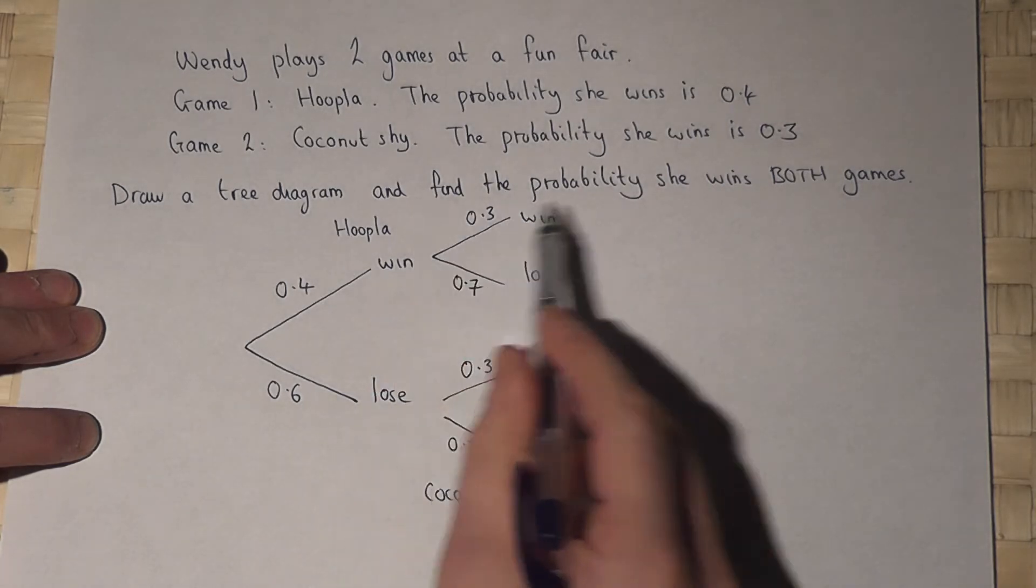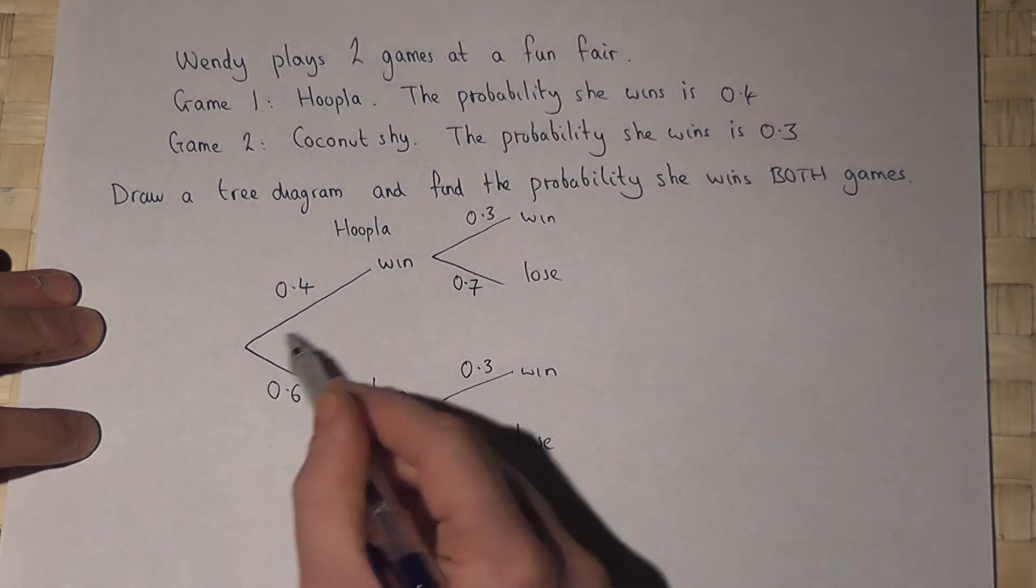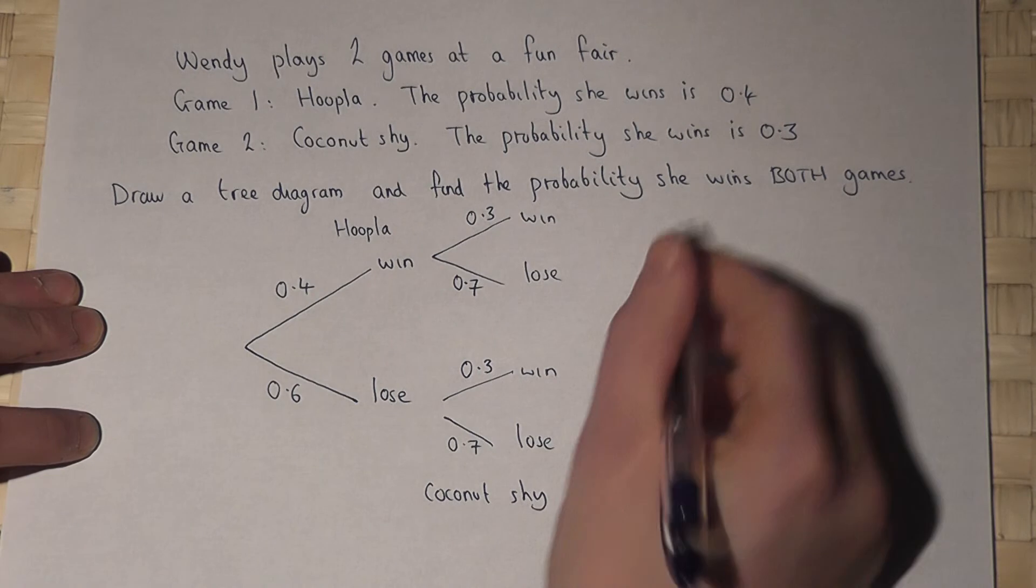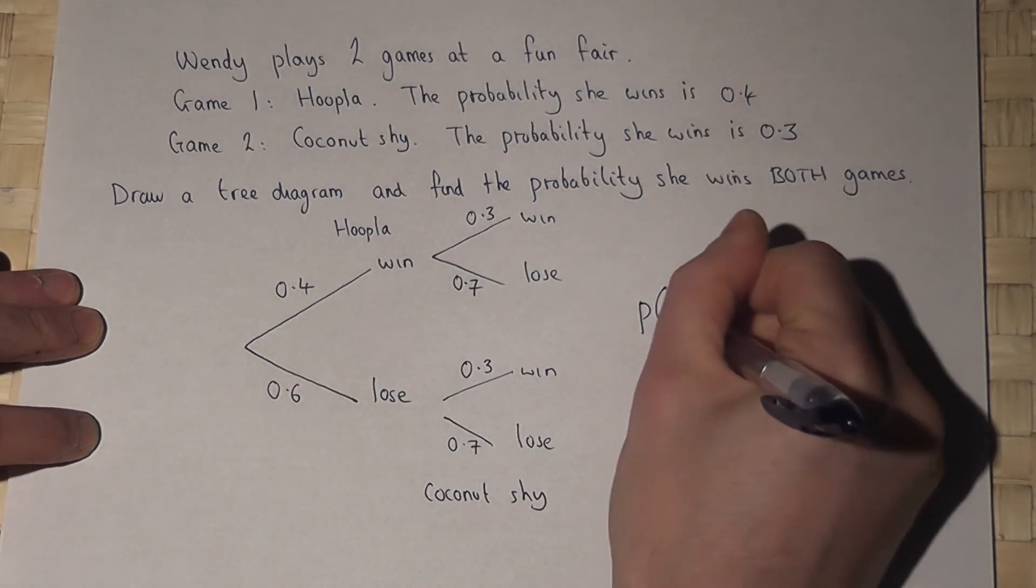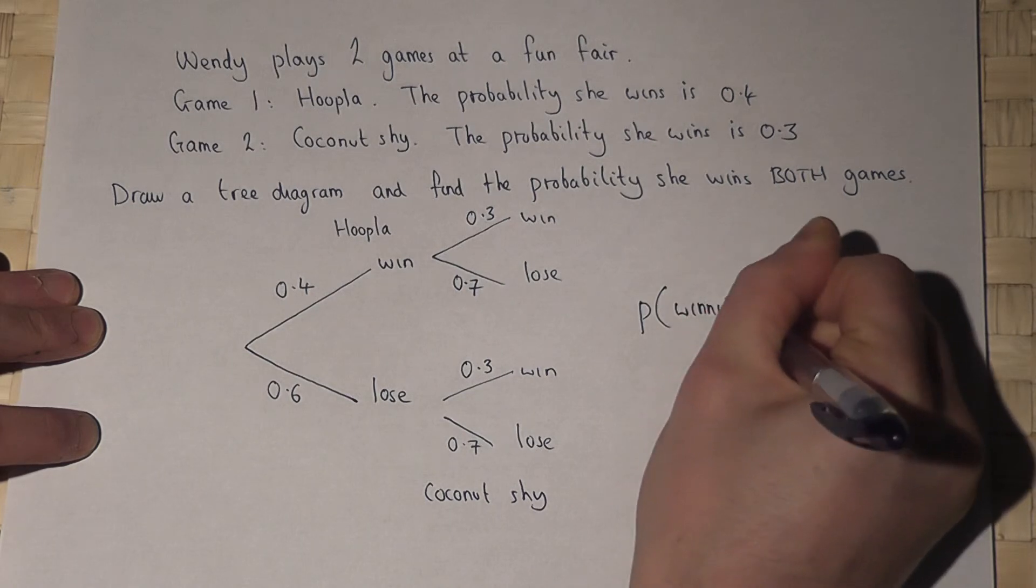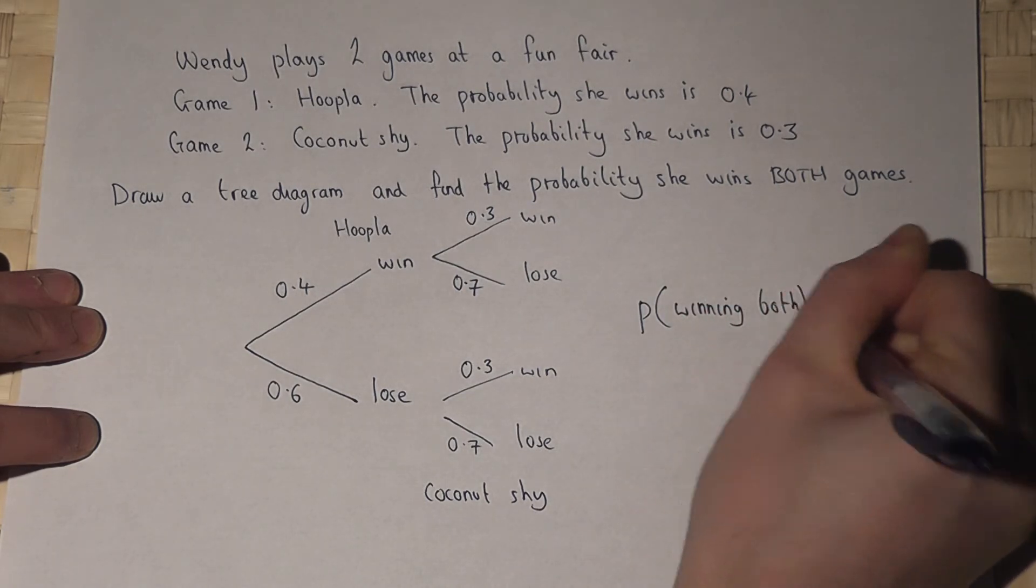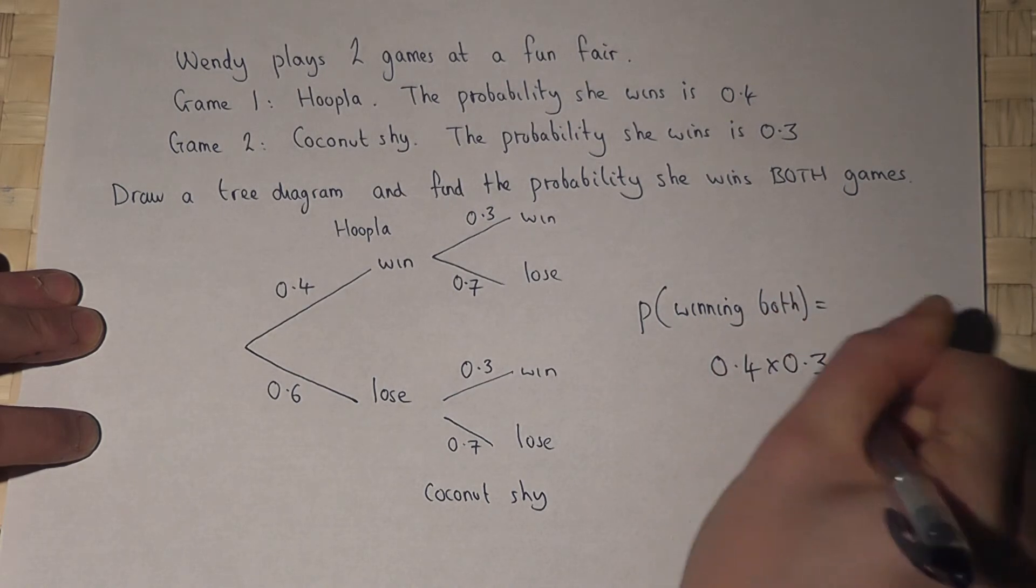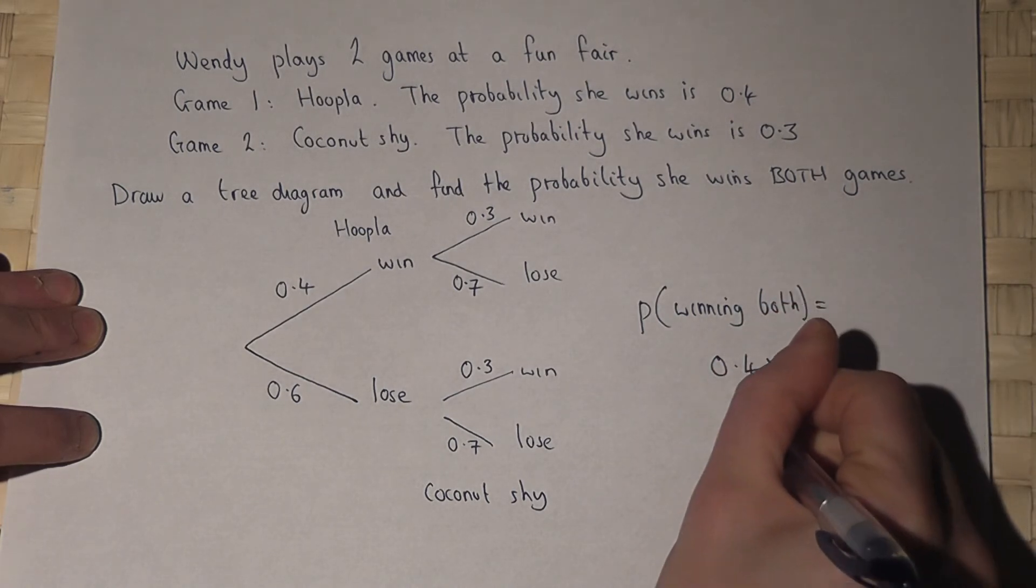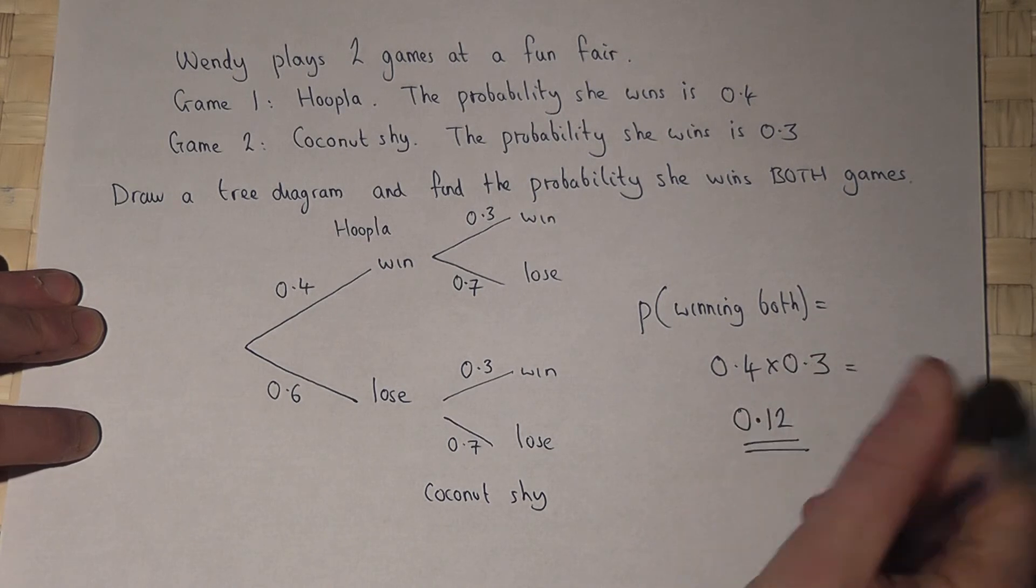So the chance that she wins both games is win, then win. And to work out the overall chance, we times together the two numbers. So the chance of winning both equals 0.4 times 0.3, which works out at 0.12.